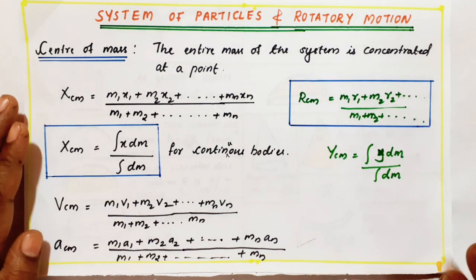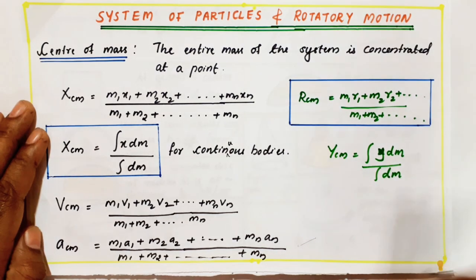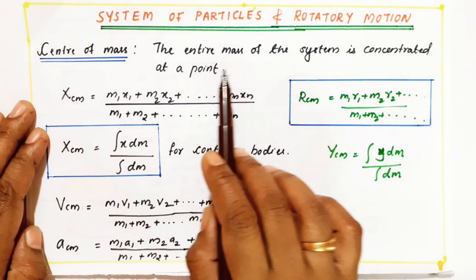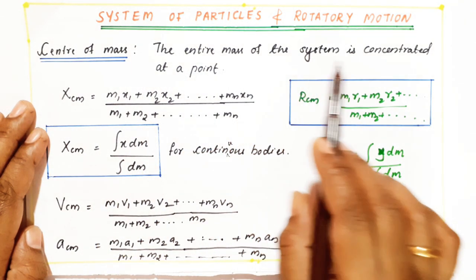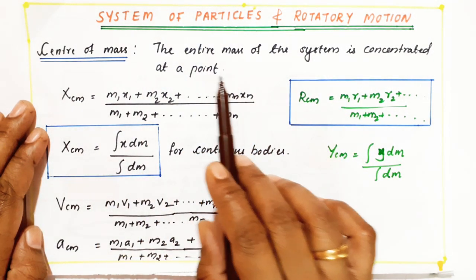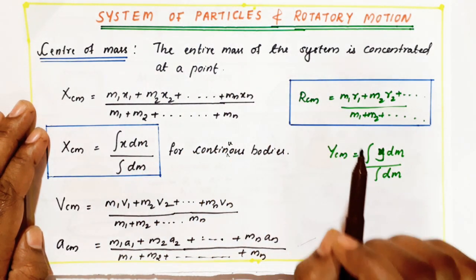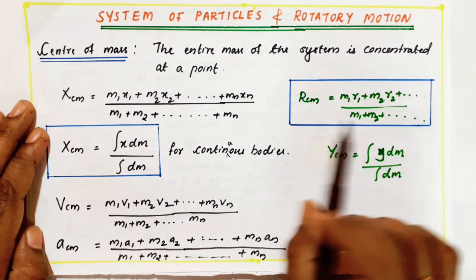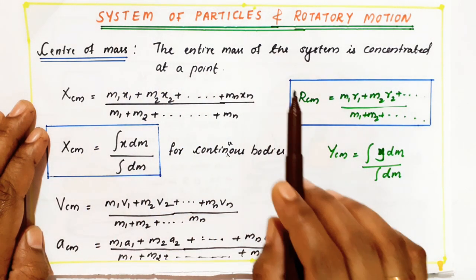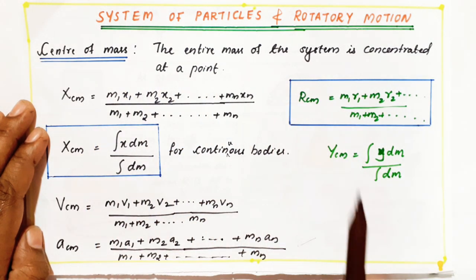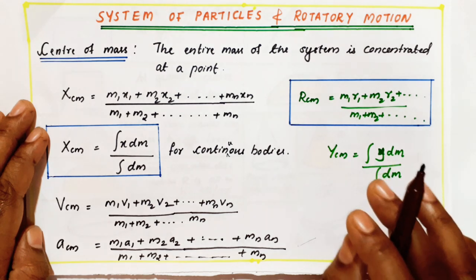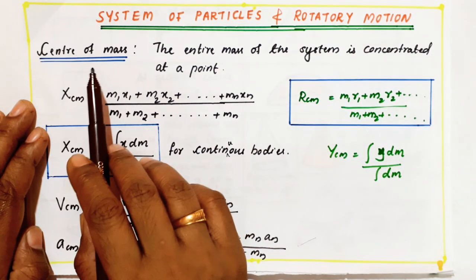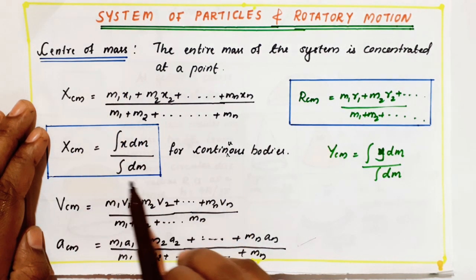First, I am going to discuss center of mass. Center of mass means the entire mass of the system is concentrated at a point, or it is the point where the entire mass of the body is assumed to be concentrated. That point is called center of mass.